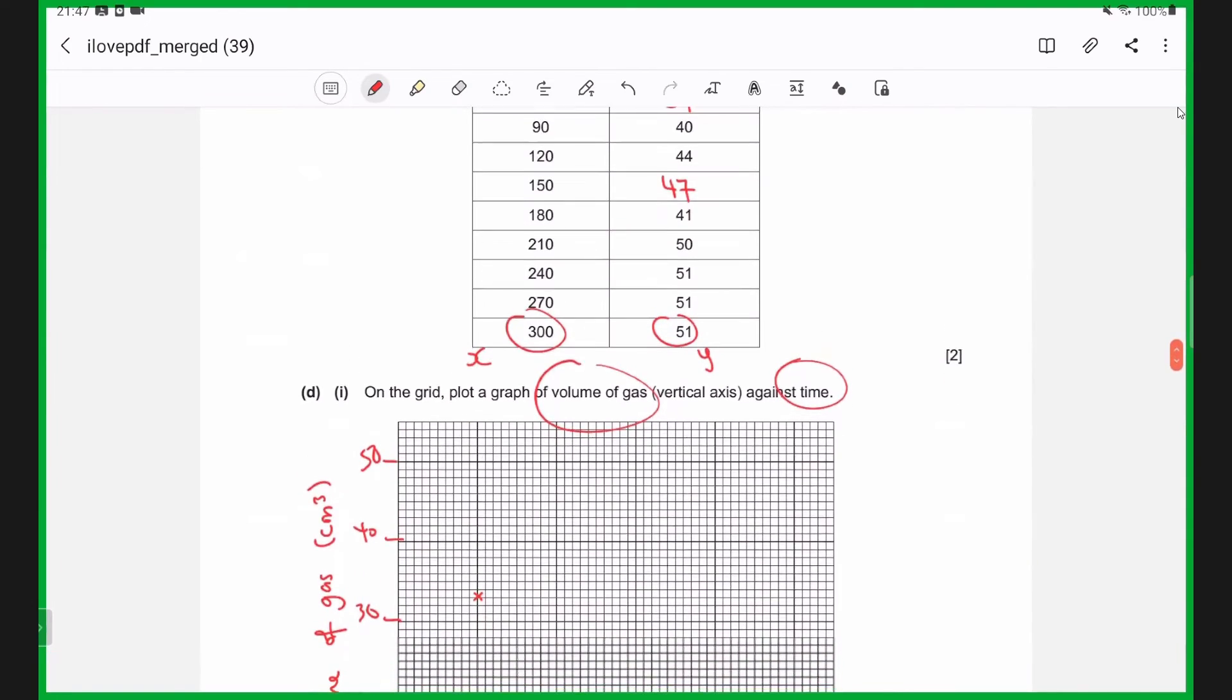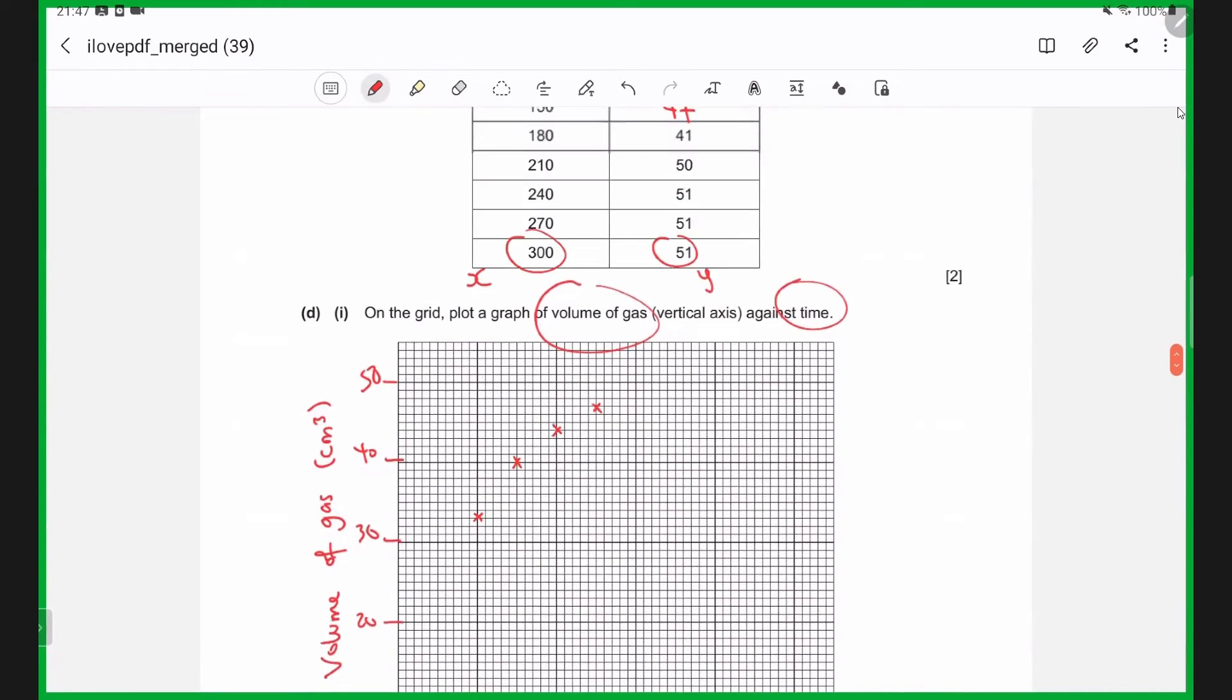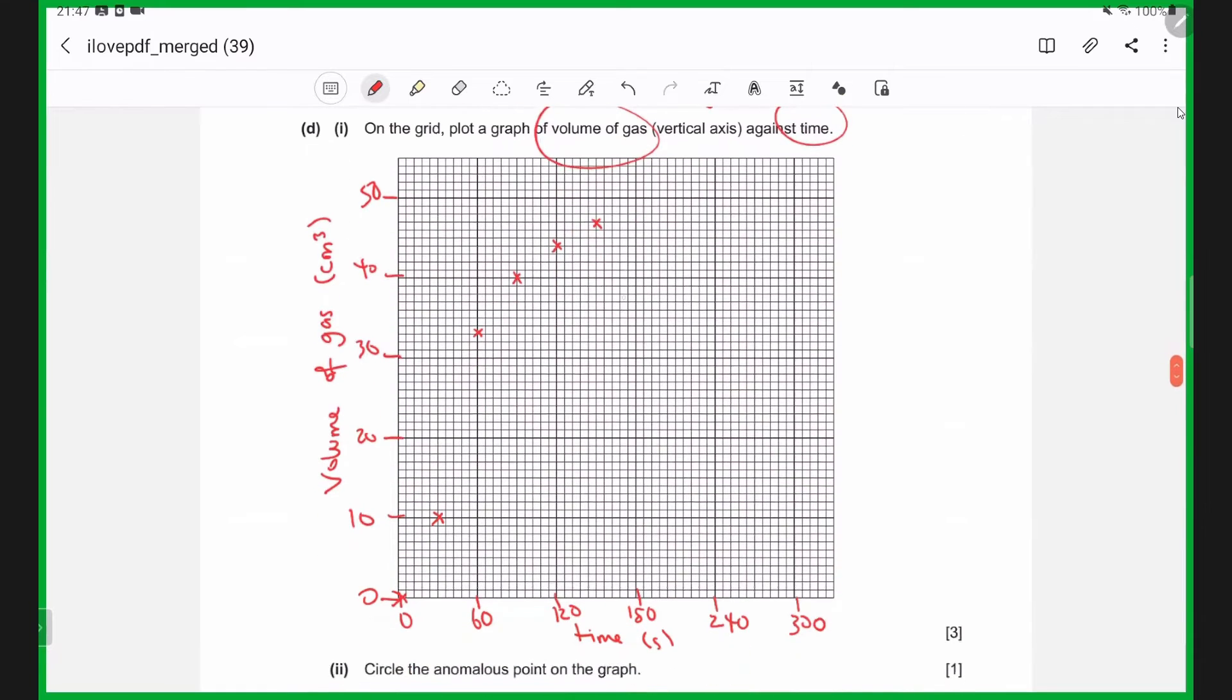And then for 180, it's 41. That's obviously anomalous. And then our other points go from 50. And then the maximum is 51 for the remaining points.